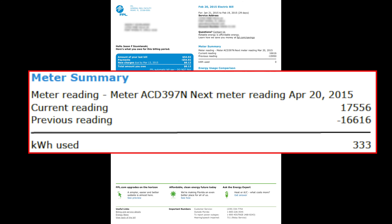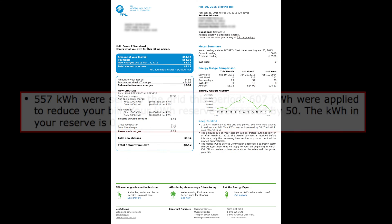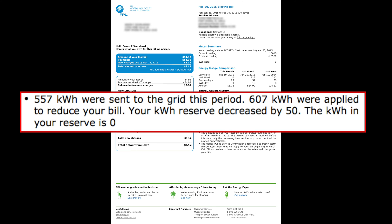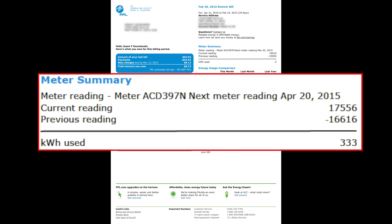333 kilowatt hours was my net consumption for the month. In the 'keep in mind' section on this bill — for some reason they don't put it in the same place when you under-produce; it's the last line — they show that 557 kilowatt hours were sent to the grid, 607 were applied to reduce the bill, and my kilowatt hour reserve decreased by 50. That means my excess production was only 557 kilowatt hours, but because I had 50 in reserve, they credited me 607 this month. If you add up the 607 plus the 333 plus my previous reading, you get the current reading of 17,556.